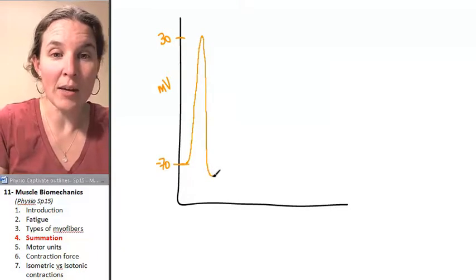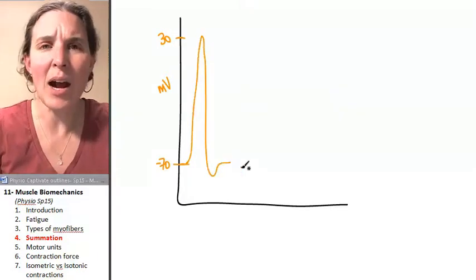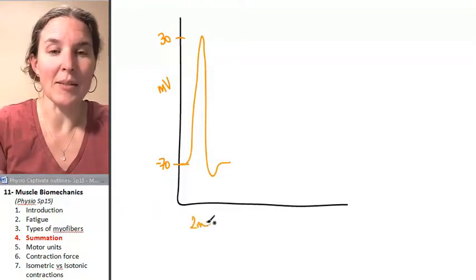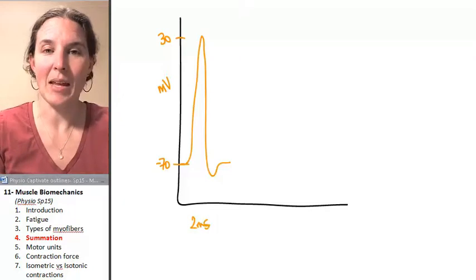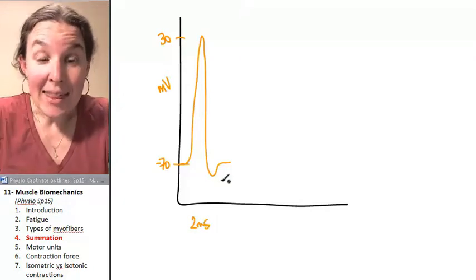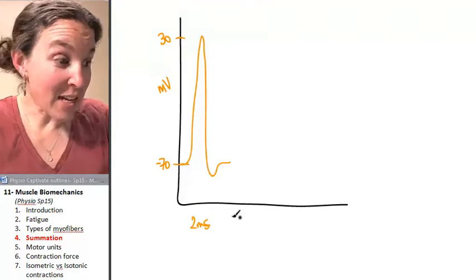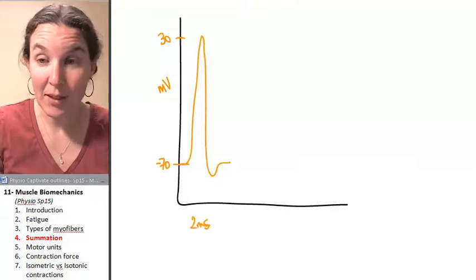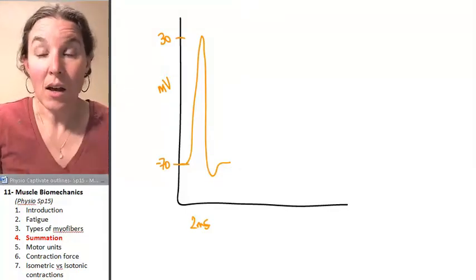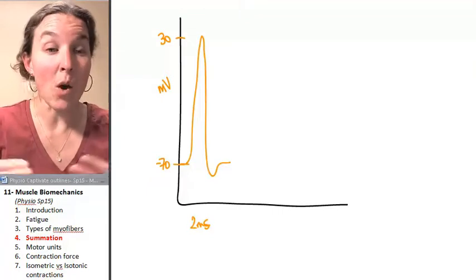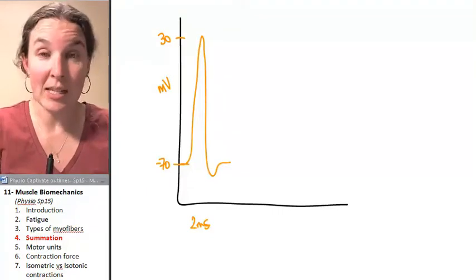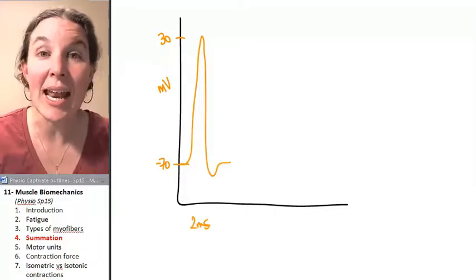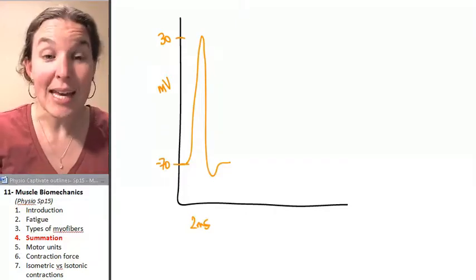We get the quick message. Does anybody remember how long that takes? Maybe two milliseconds, maybe. And then at the end of the action potential, at the end of my neuron, we're going to dump acetylcholine into the synapse. And then what does that cause? Acetylcholine is going to open sodium channels when it binds to the nicotinic receptors on the skeletal muscle fiber. That's going to initiate an action potential in the skeletal muscle.